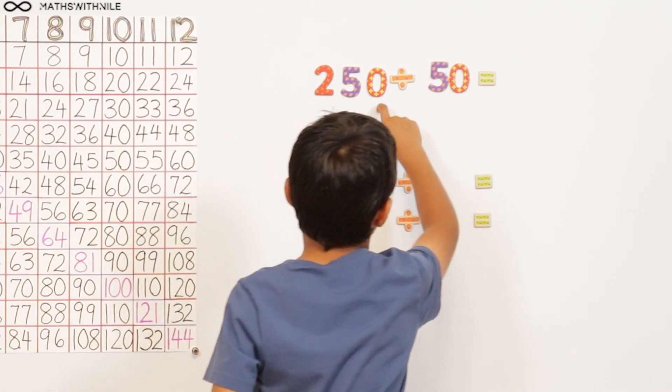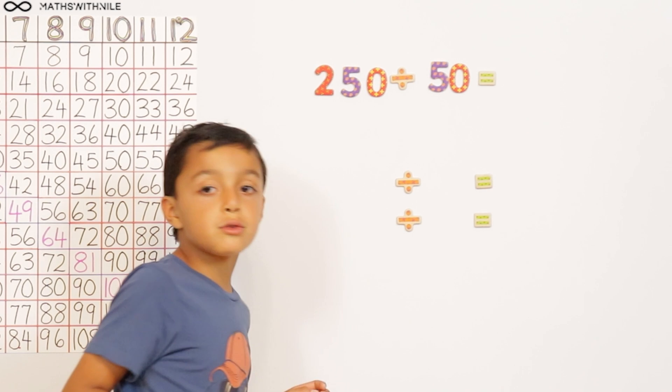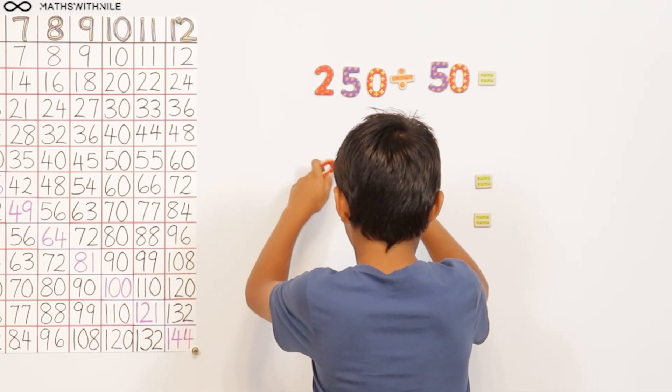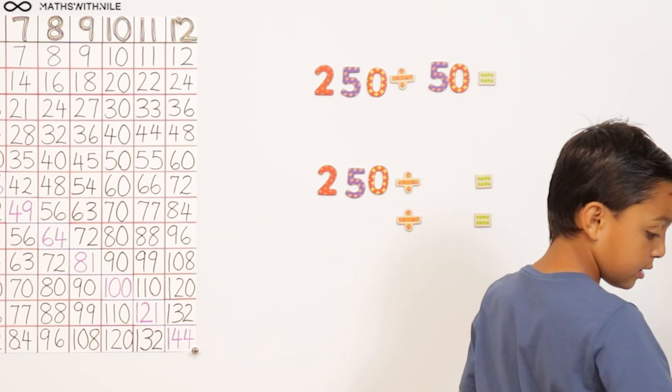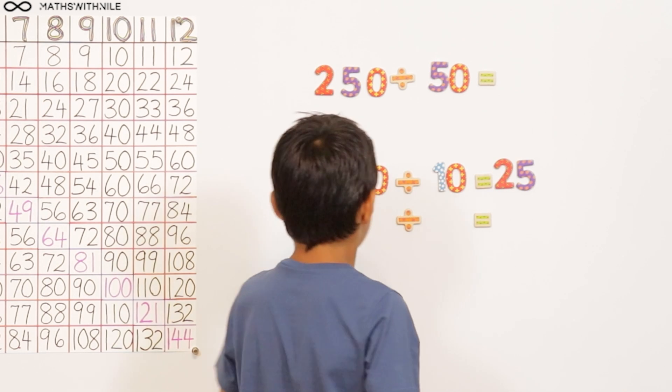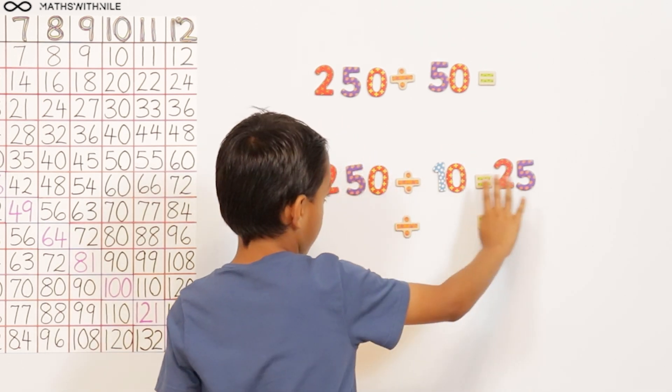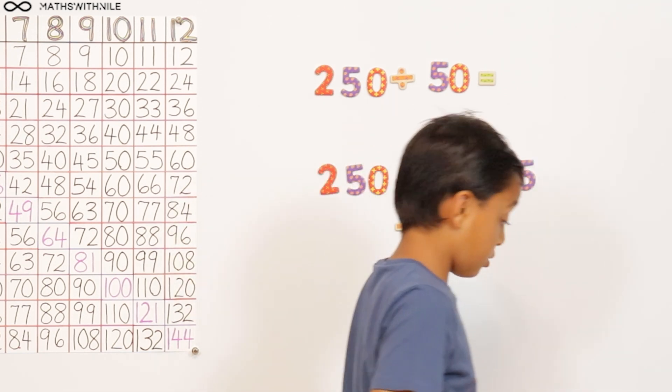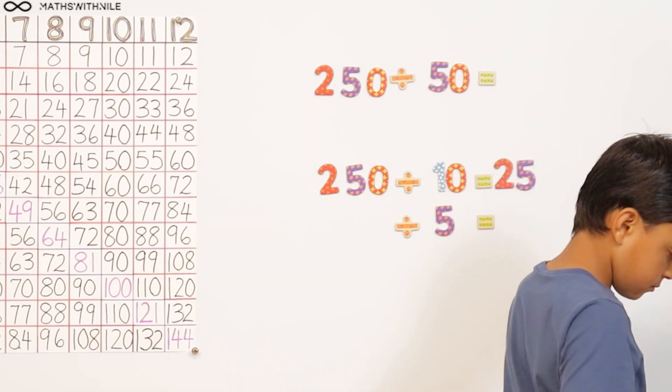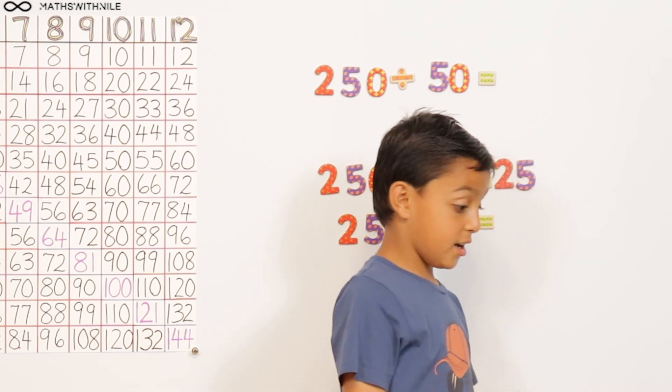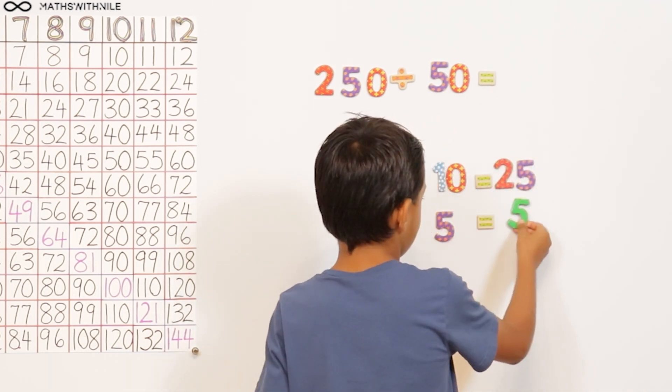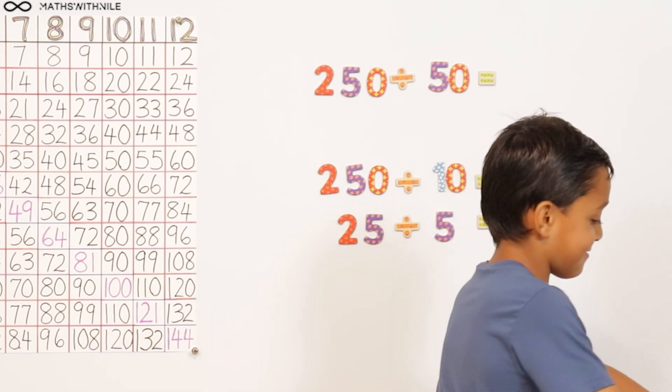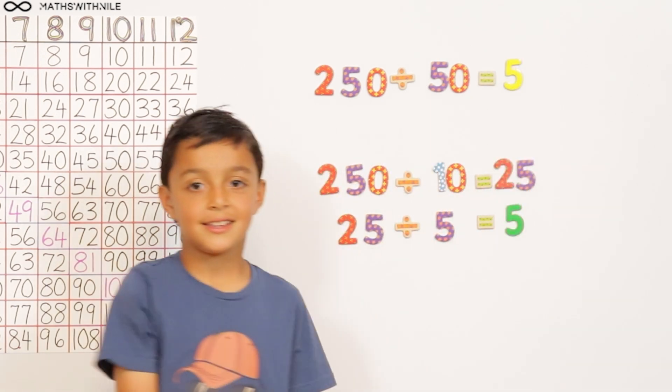What's the question on the board? 250 divided by 50. Okay. So what are you going to do? 250 divided by 10. Okay. 250 divided by 10 equals 25. 25. And then, now I'll do 25 divided by 5. Very good. Why have you chosen 5? Because 5 times 10 equals 50. Okay. What is 25 divided by 5? 5. Very good. So what is the answer to the question? 5. So 250 divided by 50 is equal to 5. Brilliant.